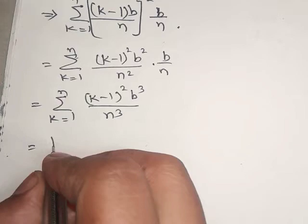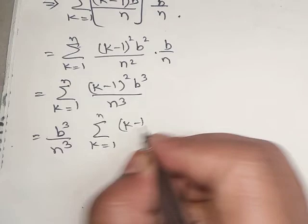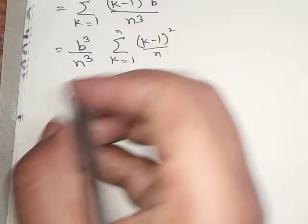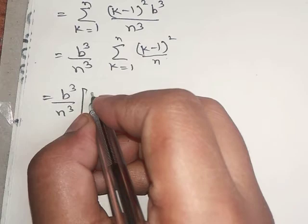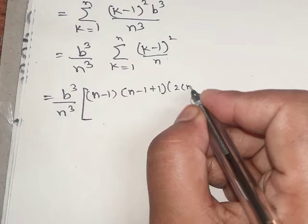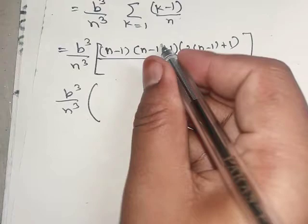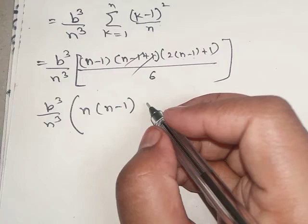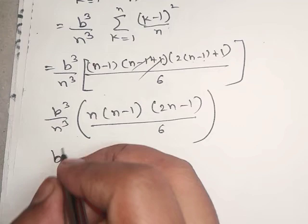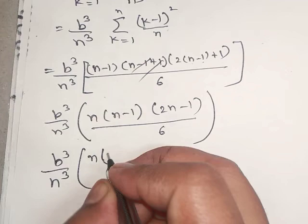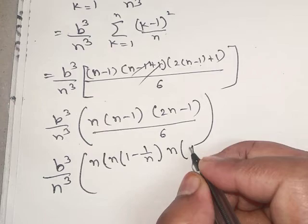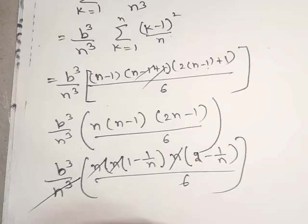Since b³/n³ is constant: L(P, f) = b³/n³ · summation k=1 to n of (k-1)². Treating this as the sum of squares with upper index n-1, we apply Σk² = n(n-1)(2n-1)/6, giving b³/n³ · n(n-1)(2n-1)/6. Taking n common from each factor: b³/n³ · n·(1 - 1/n) · n·(2 - 1/n) / 6. The n³ terms cancel, leaving b³(1 - 1/n)(2 - 1/n)/6.